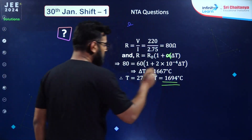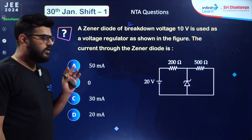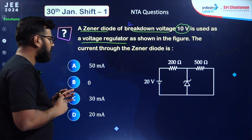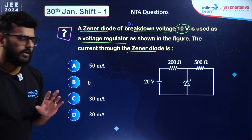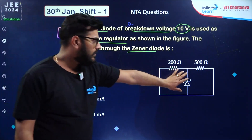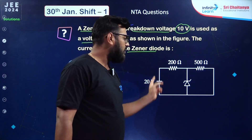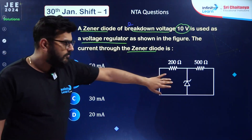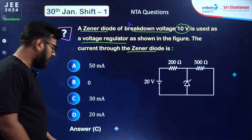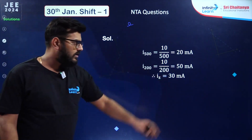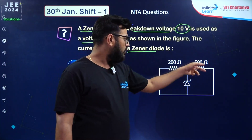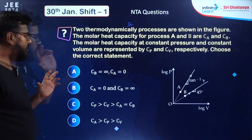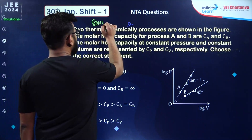From semiconductors: a Zener diode of breakdown voltage 10 volt is used as a voltage regulator. The current through the Zener diode is asked. There's a potential difference of 10 volt across the Zener. Treating it like an EMF, you find the current running in the circuit, then subtract to get the current through the Zener. On solving — 20 minus 10 across 500 gives the current — the answer is 30 milliampere.